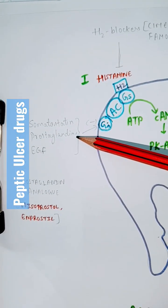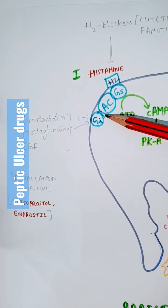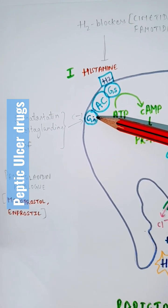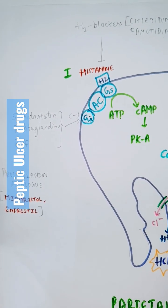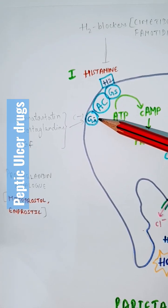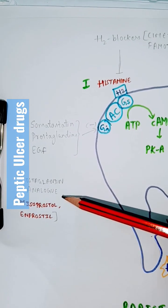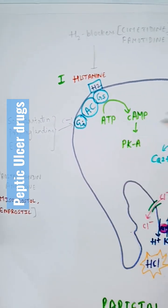Now if you see prostaglandins, normal action of prostaglandin is it stimulates GI. So it inhibits production of HCL. It is a G protein inhibitor. That's why prostaglandin analogues like misoprostol and enprostil is also given in peptic ulcer disease.